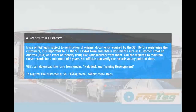Issue of FASTag is subject to verification of original documents required by SBI. Before registering customers, it is important to fill the SBI FASTag form and obtain documents such as customer Proof of Address (POA) and Proof of Identity (POI) like Aadhaar from them. You are required to maintain these records for a minimum of three years, as SBI officials can verify the records at any point of time. VLEs can download the form from under Help Desk and Training Development.